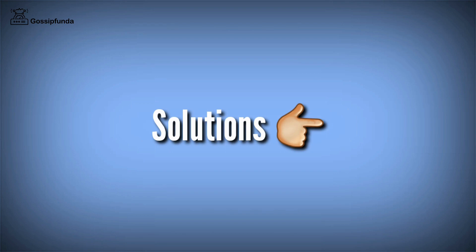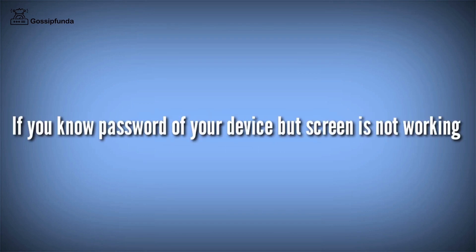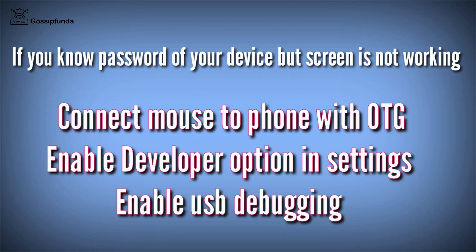Now let's go to the solutions. If your device is locked and your screen is not working but you know the password, then connect a mouse to your device with the help of an OTG. Now you can easily unlock your device. Go to settings, tap 7 times on your UI to enable developer options, go to additional settings, select developer option, and enable USB debugging.